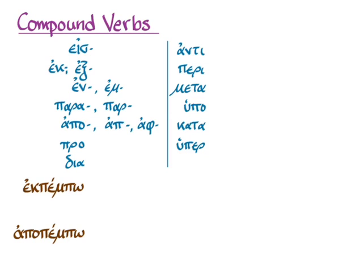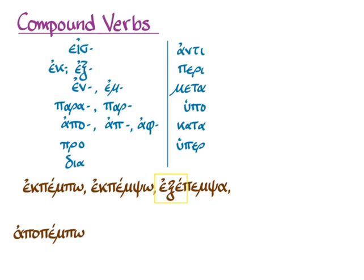We don't have an example of that now, but we do have an example of a verb with 'apo.' 'Apopempo' means, of course, 'send away.' I wanted to start showing you one of the strangenesses of compound verbs in Greek, which is why it even merits its own video. With 'ekpempo' and 'ekpemso,' it's pretty simple — you're simply adding the preposition to the forms you already know. In the third principal part, however, you get 'exepempsa,' and notice that the augment goes between the prefix and the stem of the verb. With 'ek,' it also changes which consonant ends the prefix itself.